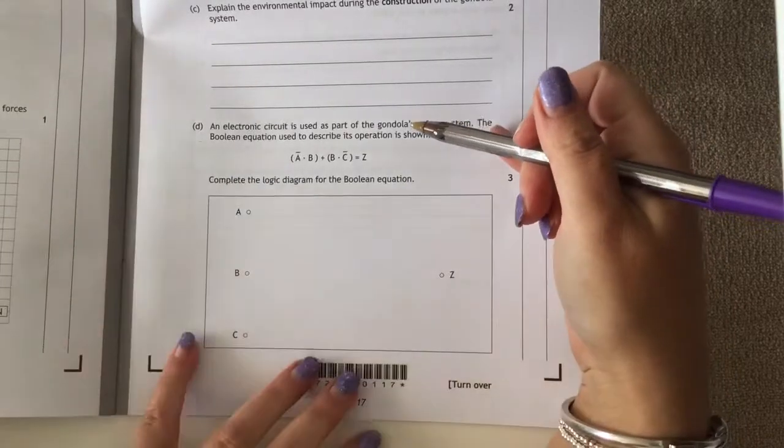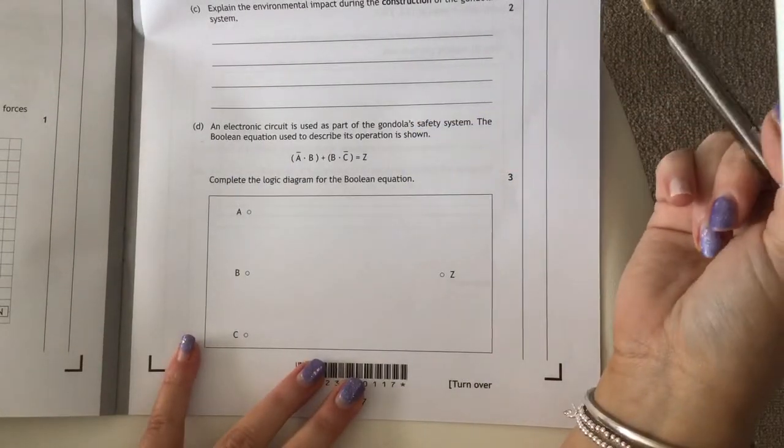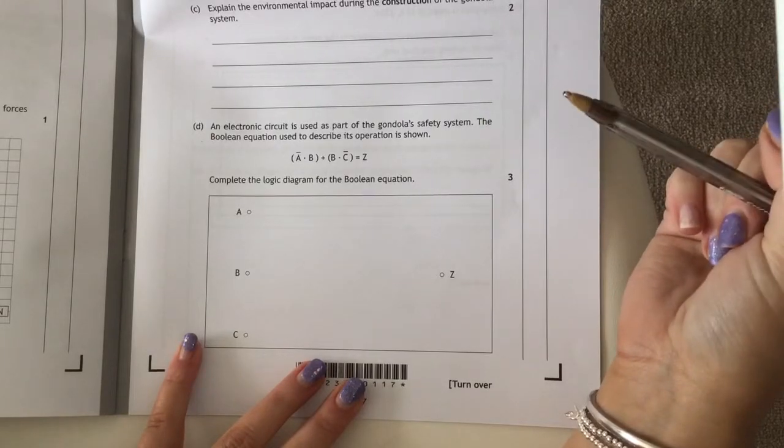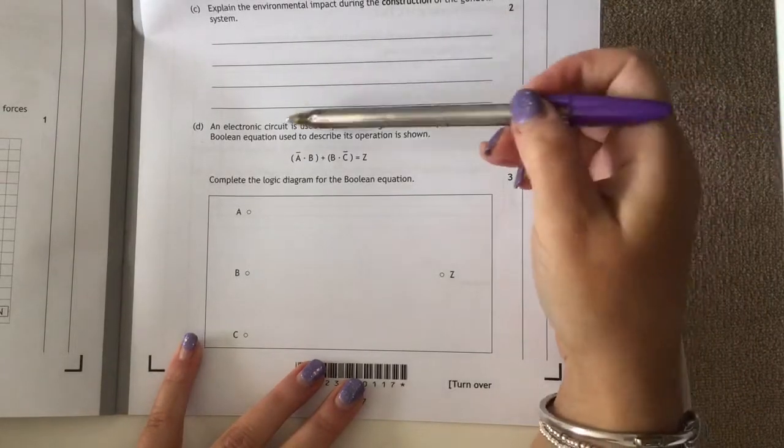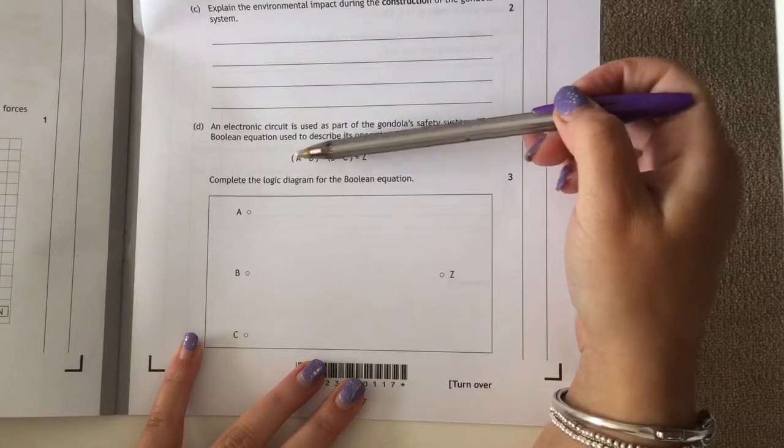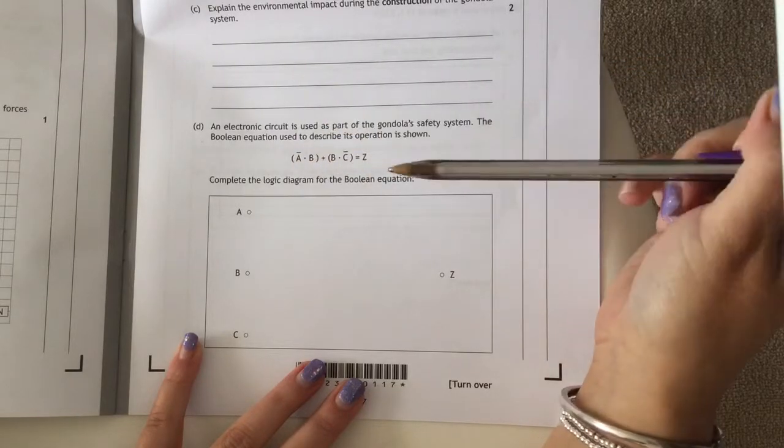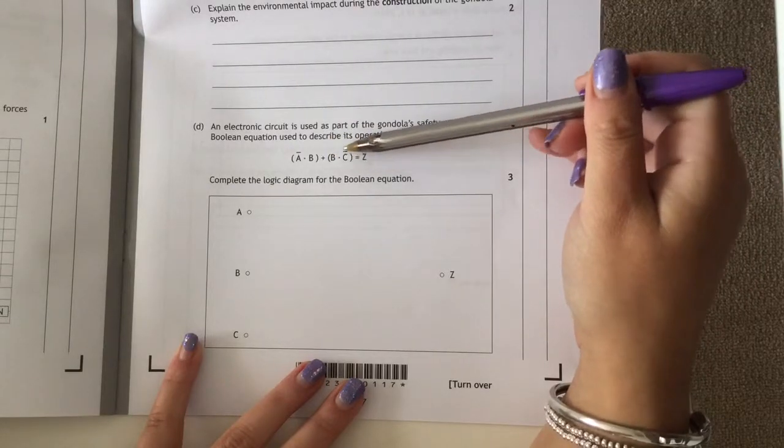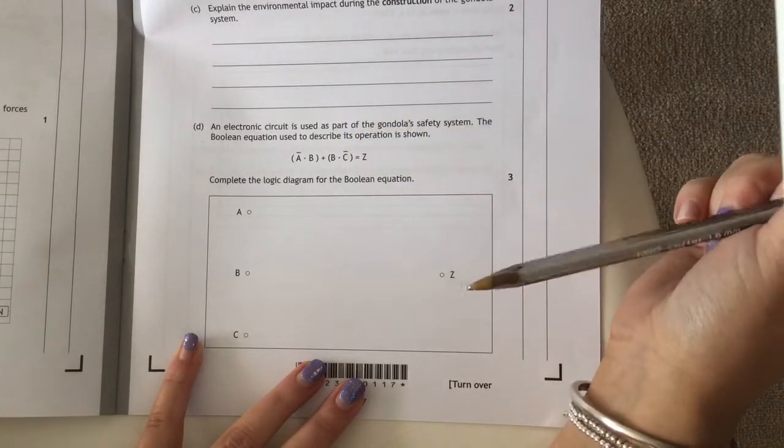When completing a logic diagram from an equation, we need to identify the correct gates first. For this question we have NOT A and B in brackets, OR, and then B and NOT C, which equals Z.